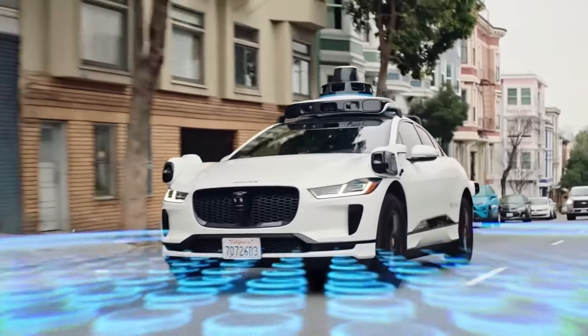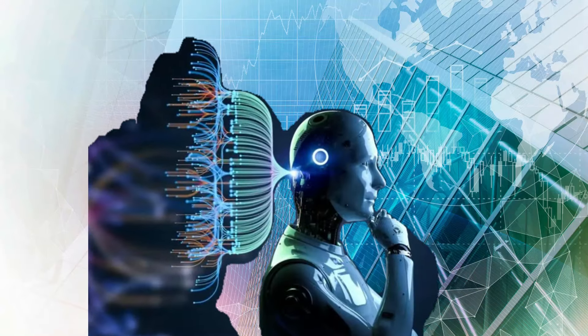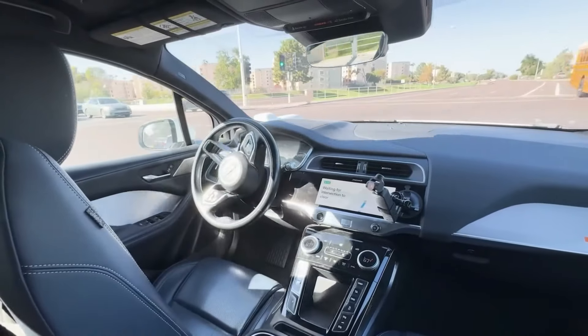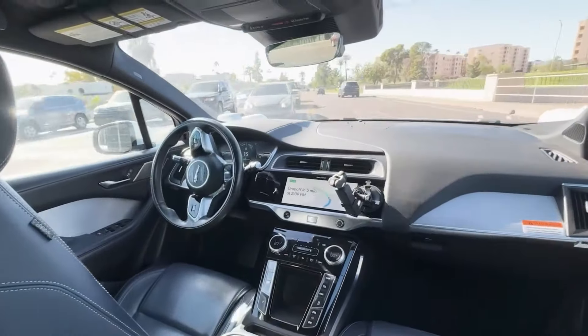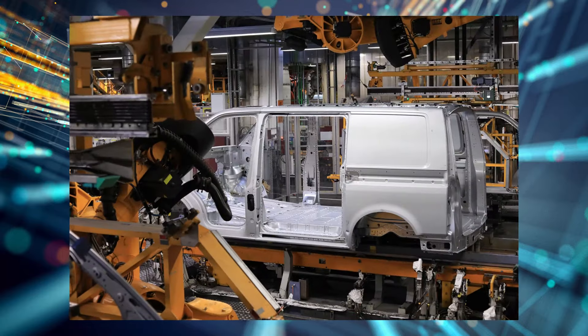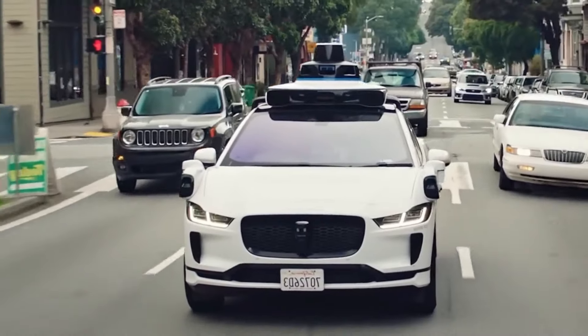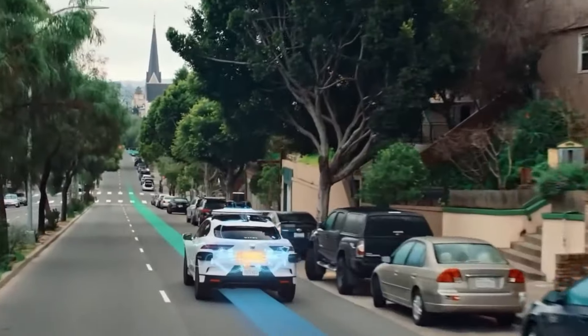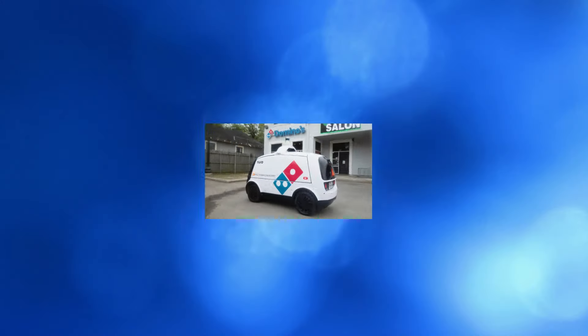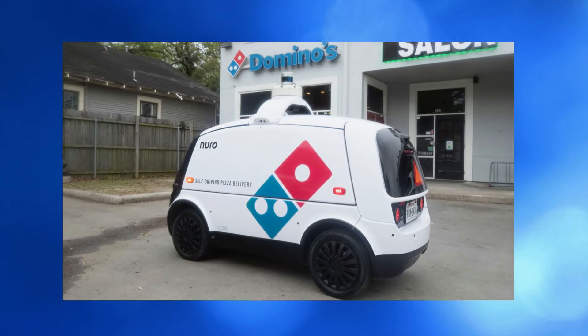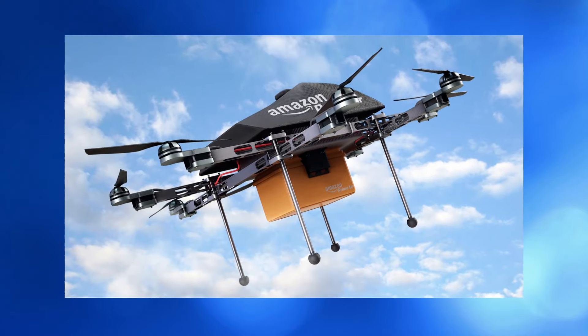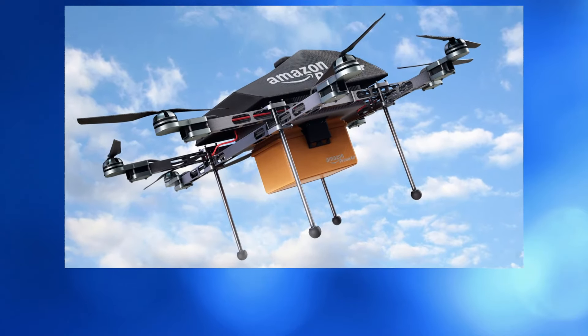Self-driving cars employ cameras, radar, LIDAR, and other sensors to sense their environment. Artificial intelligence is then used to evaluate this data and make judgment calls about how to move across the road. Although they're still in the early stages of development, self-driving cars have the potential to completely change logistics and transportation. Domino's Pizza has a self-driving pizza delivery van, and Amazon has its Prime Air delivery service.